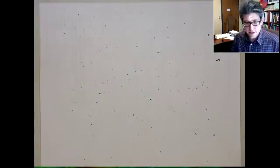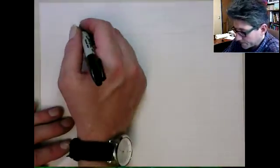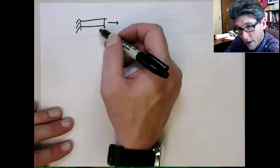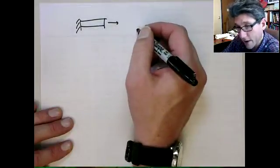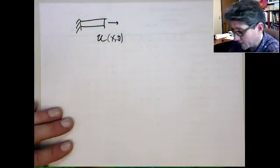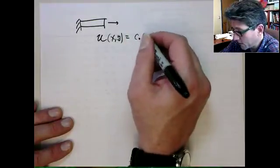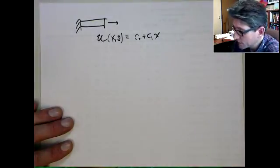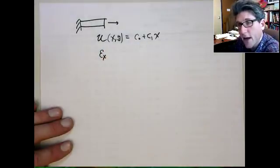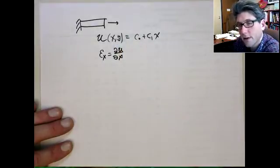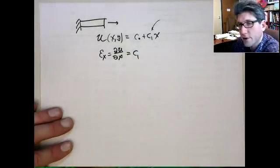Let me just do one other quick example just to give you an illustration of the different types of dilatation. So let's consider a bar that's simply stretching. The displacement here is actually a linear function of x. So it's only deforming in the x direction, and it's really just a function of x. So it's going to be something like c naught plus c1 times x. If we look at the strain in the x direction, it's the only one of interest. You can see this just becomes c1. So that linear coefficient is the strain.